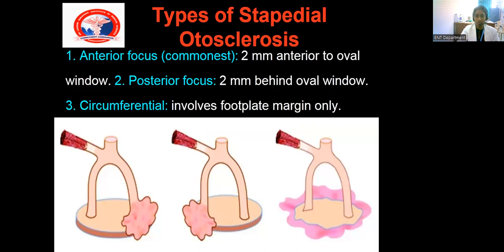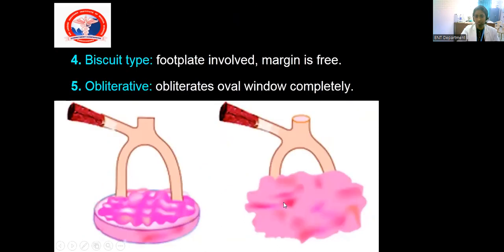There are five main types of stapedial otosclerosis: anterior, posterior, circumferential, biscuit type, and obliterative. Anterior type means otosclerosis involving the anterior part of the footplate, or present 2 mm anterior to the oval window — this is the most common site, also called fistula ante fenestram. Posterior focus means the lesion is 2 mm behind the oval window near the posterior part of the footplate. Circumferential doesn't involve the footplate itself but involves the margin of the footplate. Biscuit type has the otosclerotic lesion present in the footplate but the margins are free. Obliterative type means the otosclerotic lesion is present throughout the entire footplate, margins, and crura — this is the most severe type, making stapedectomy very difficult.